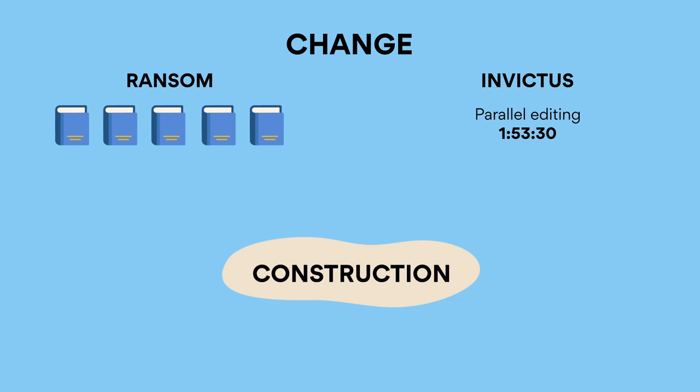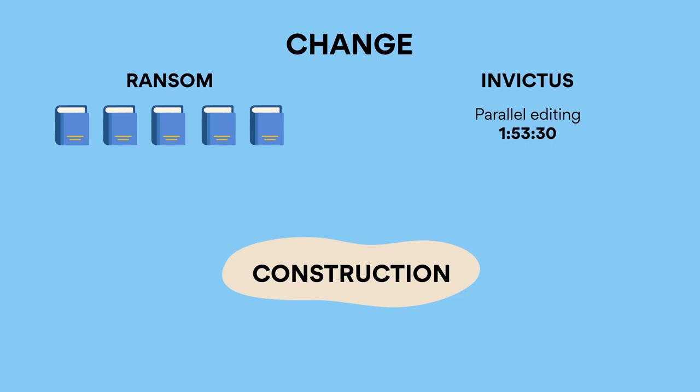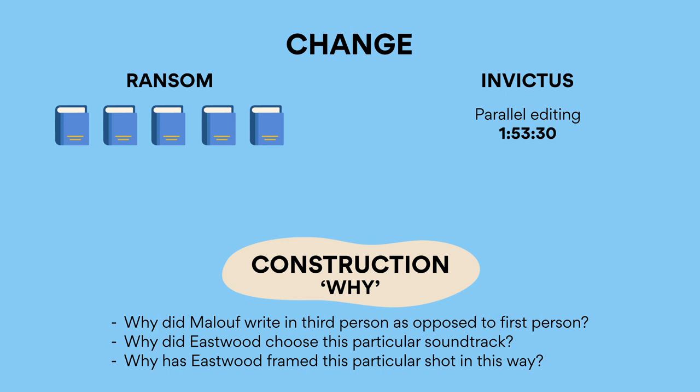It's important to view these texts as a construction and to acknowledge that authors have arranged their respective texts in a certain way. If you're struggling to understand literary devices, Google some online and start asking yourself why questions about how the text is constructed. Why did Malouf write in third person as opposed to first person? Why did Eastwood choose this particular soundtrack? Why has Eastwood framed this particular shot in this way? Remember, it's not enough to simply label particular textual conventions or literary techniques — you need to articulate why Malouf or Eastwood has used them. This is the underlying principle of the entire English course. Also note that Ransom and Invictus are different in both content and medium, so while they have many similarities, they are individual texts, and you can explore how their different textual conventions alter what they're saying about a common theme.